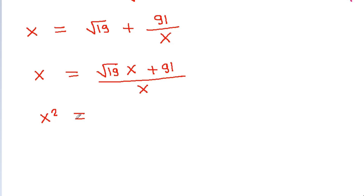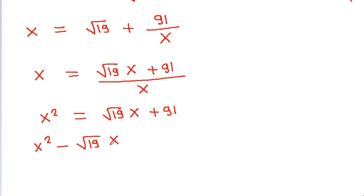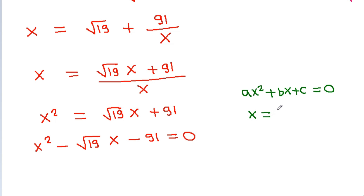then x squared will be equal to square root of 19 times x plus 91, and x squared minus square root of 19 times x minus 91 will be equal to 0. And for ax squared plus bx plus c equal to 0,